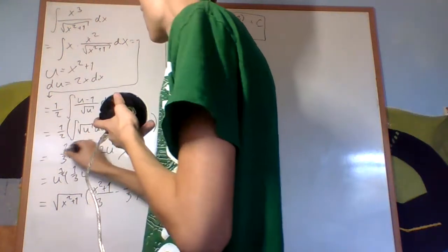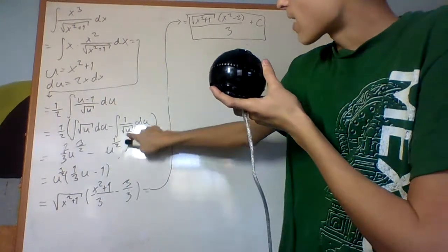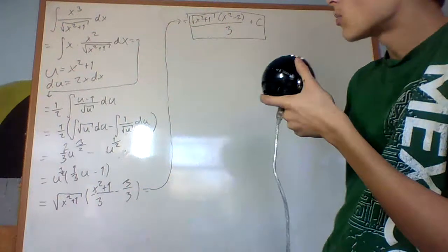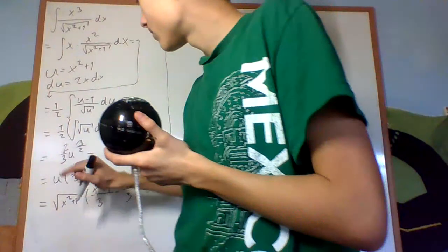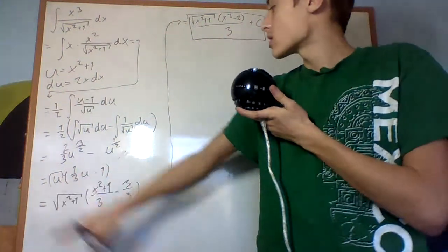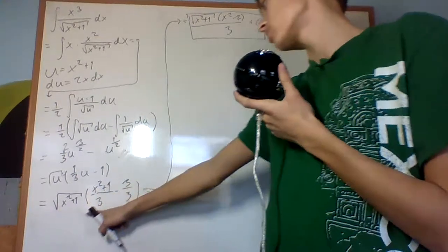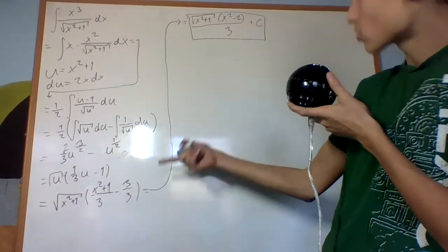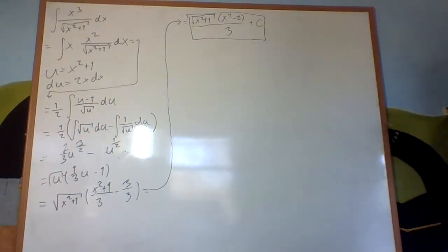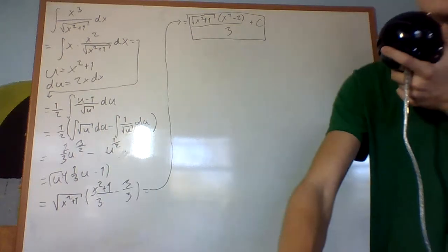From there, you factor out u to the one half, and u to the one half is the square root of u. Substituting u equals x squared plus 1, you get the square root of x squared plus 1 times x squared plus 1 over 3 minus 3 over 3, because 1 is 3 over 3. Simplifying, you get the square root of x squared plus 1 times x squared minus 2 over 3 plus C. And we're done!